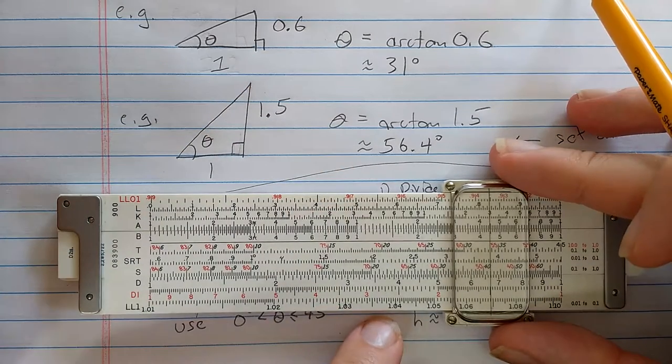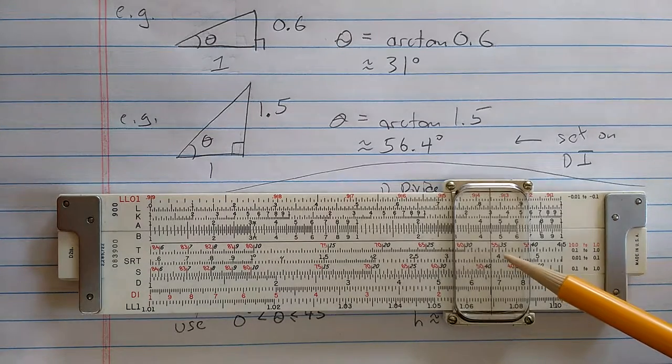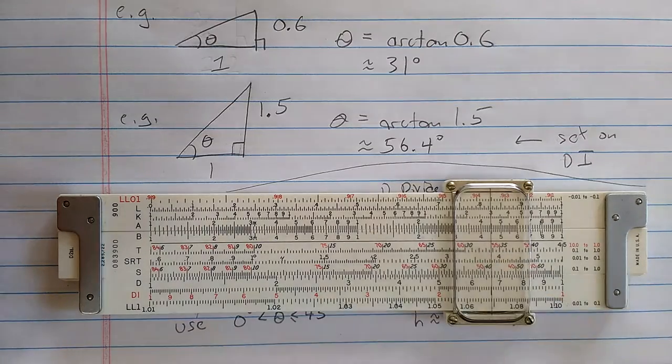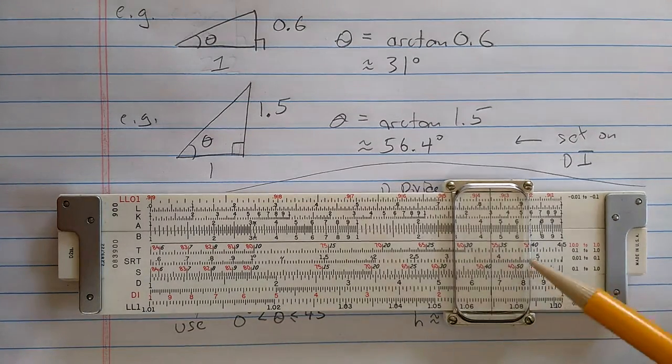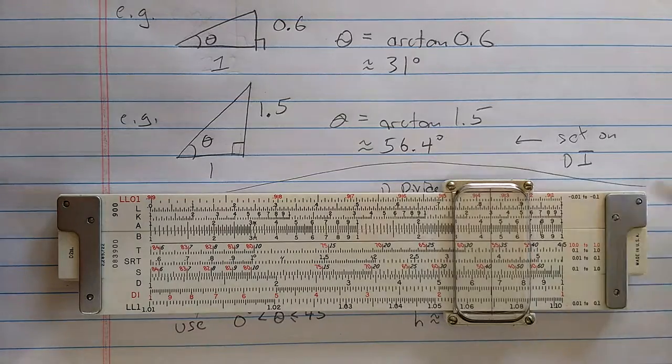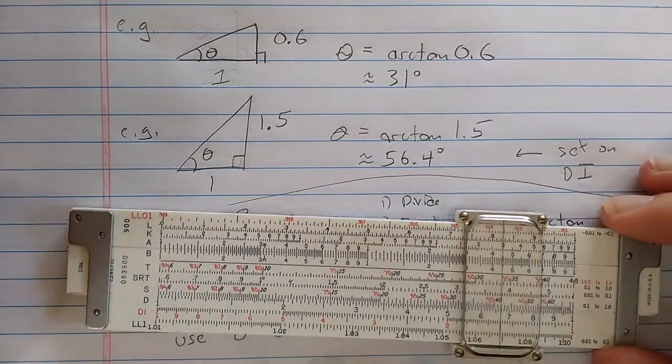And then I'm going to read the result on the tangent scale, but I'm going to make sure that I read the red marks. So 56.4, reading the red mark on the T scale. If you have a T2 scale, you would be setting this 1.5 on the D scale, and on the T2 scale finding the angle.